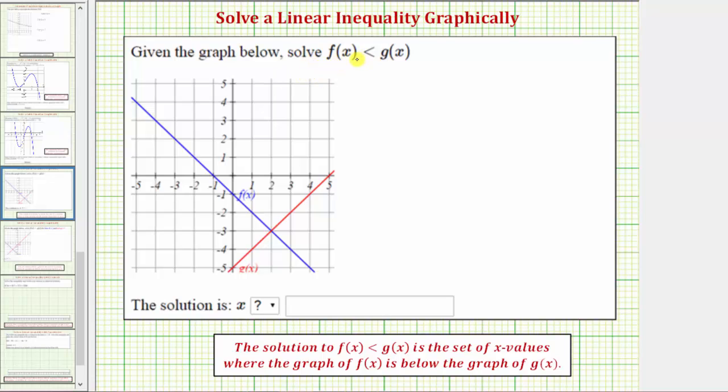Given the graph below, solve f(x) < g(x), where f(x) is the graph of the blue line with a negative slope, and g(x) is the graph of the red line with a positive slope.